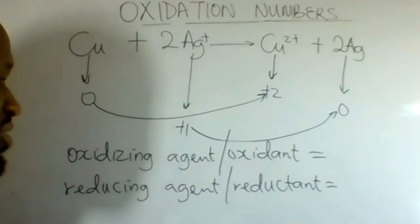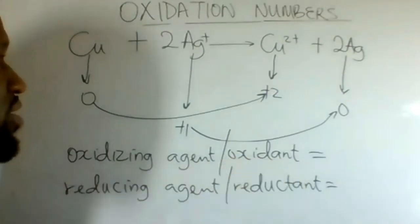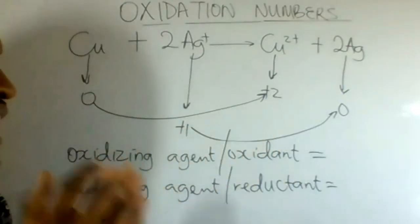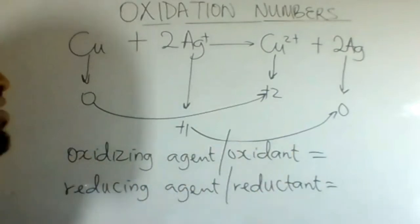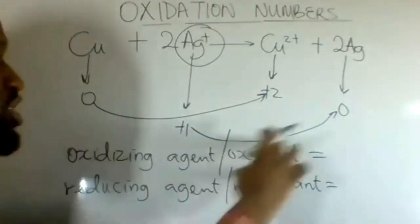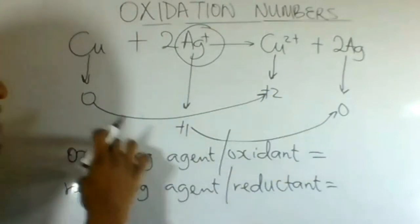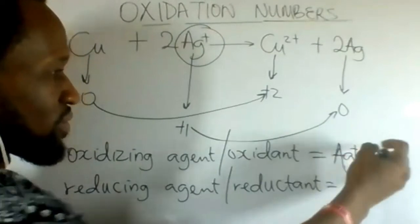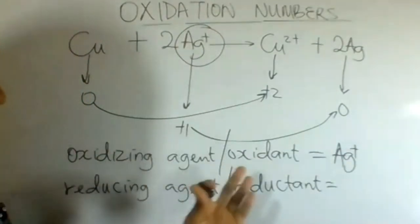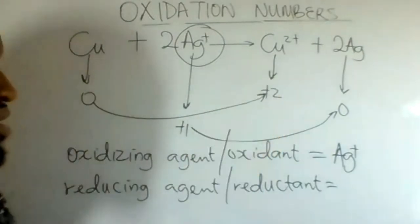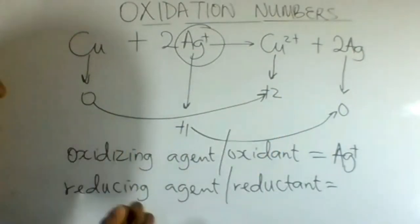How do we then determine the oxidizing agent or the oxidant? Copper was oxidized — what atom made copper be oxidized? It is silver ion. Silver ion caused the oxidation of copper. Therefore, the oxidizing agent or the oxidant is silver ion — that is what made copper be oxidized. The oxidizing agent causes oxidation.